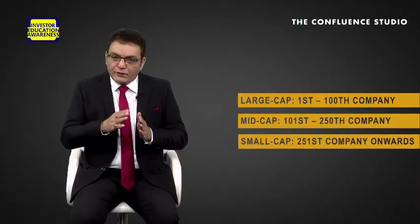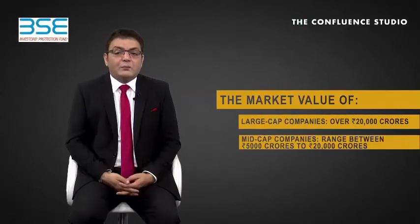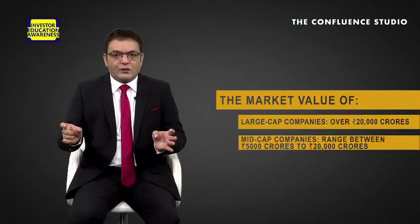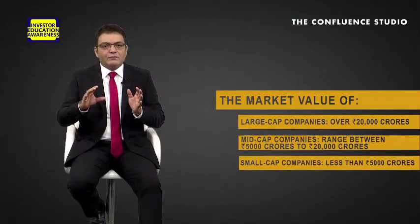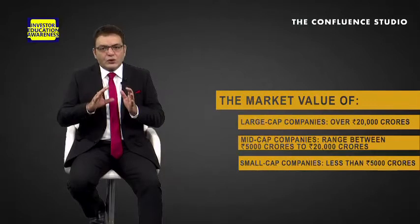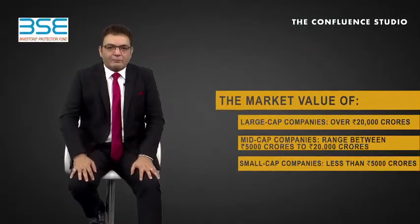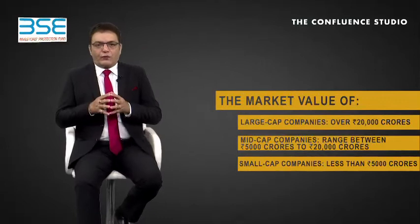Large cap: the first to 200th company. Mid cap: the 101st to 250th company. And small cap: the 251st company onwards. Large cap companies are generally organizations with a market value of over 20,000 crore. Mid caps are businesses ranging between 5,000 to 20,000 crore, and small cap firms are generally those with less than 5,000 crore of market cap.